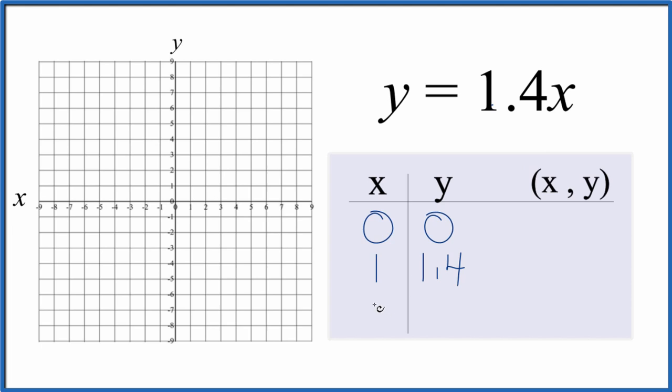And just how about 3? If we have 3, 1.4 times 3, that gives us 4.2 for y.